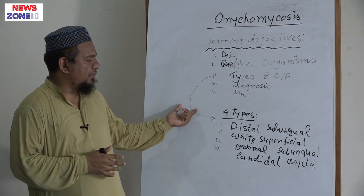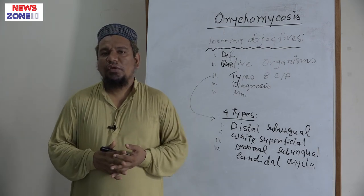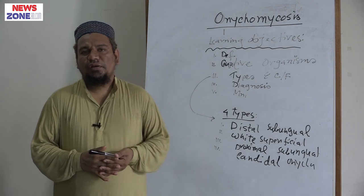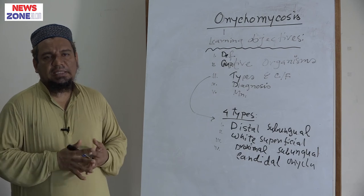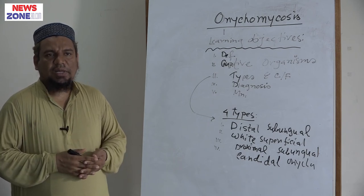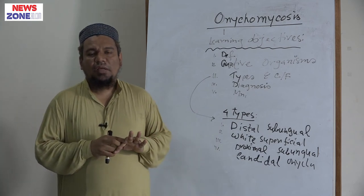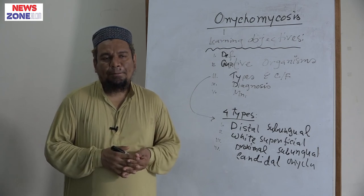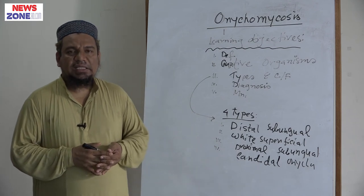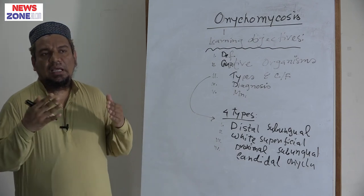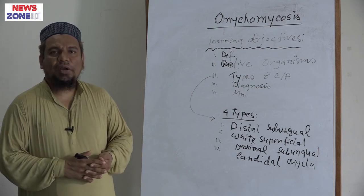What are the complications of onychomycosis? Practically, there are no severe complications. Very rarely there may be cellulitis, or associated tinea pedis, or erosive interdigitalis blastomycosis — which is another type of tinea pedis — involved along with the onychomycosis.